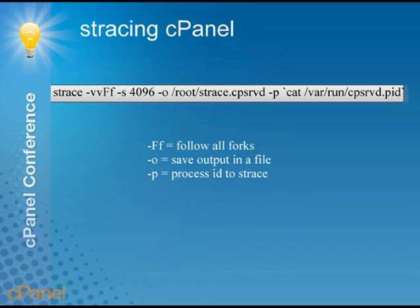A very useful strace string for tracing cPanel: CPSRVD is the main cPanel WHM process, and that's pretty much always what you're going to want to look at if the problem is with cPanel. The command uses -vv for verbose, capital F and little f for following both kinds of forks — cPanel forks things a lot, so you definitely want that. We're outputting to /root/strace.cpsrvd because we'll get a lot of information to process manually. Then: -p `cat /var/run/cpsrvd.pid` — that's always where the running PID is stored, so you don't have to look it up.